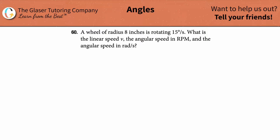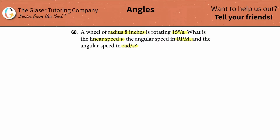Problem number 60: a wheel of radius 8 inches is rotating 15 degrees per second. What is the linear speed, the revolutions per minute, and the radians per second? So we have a wheel — it's circular. The radius of this circle is going to be 8 inches.